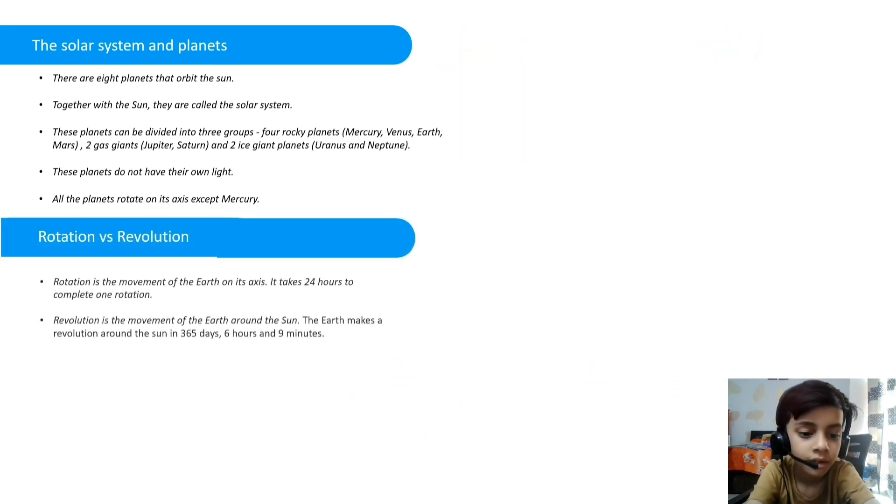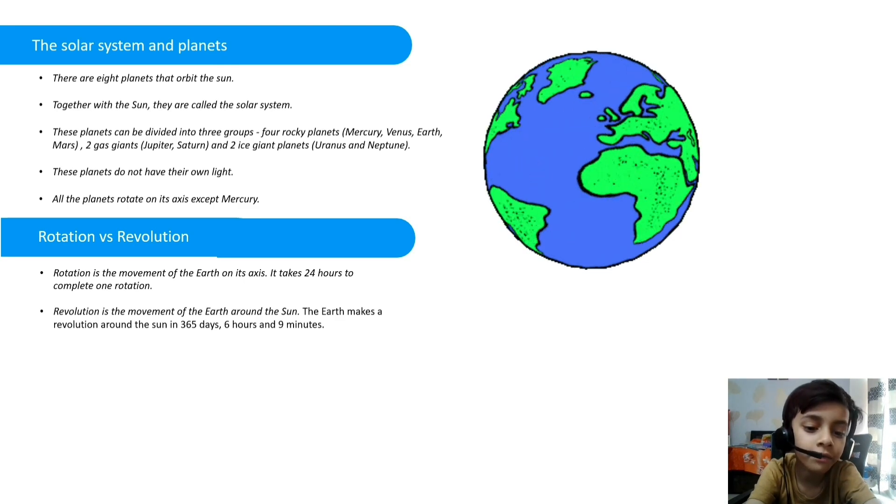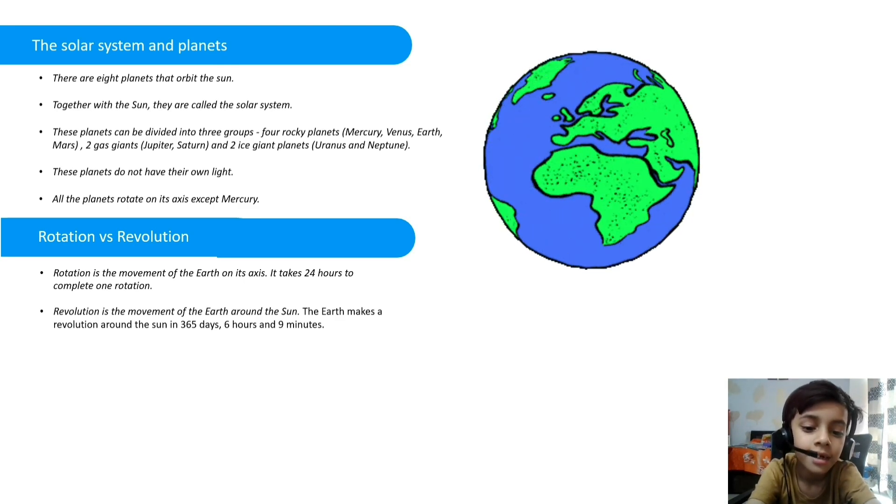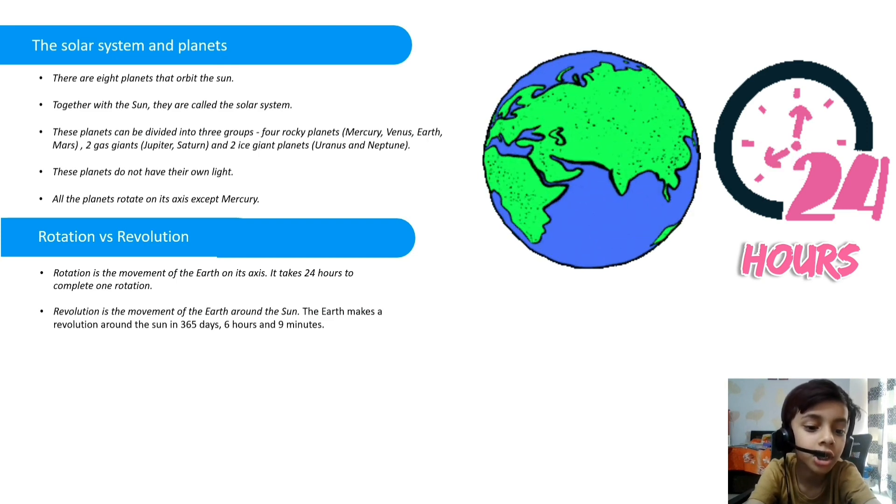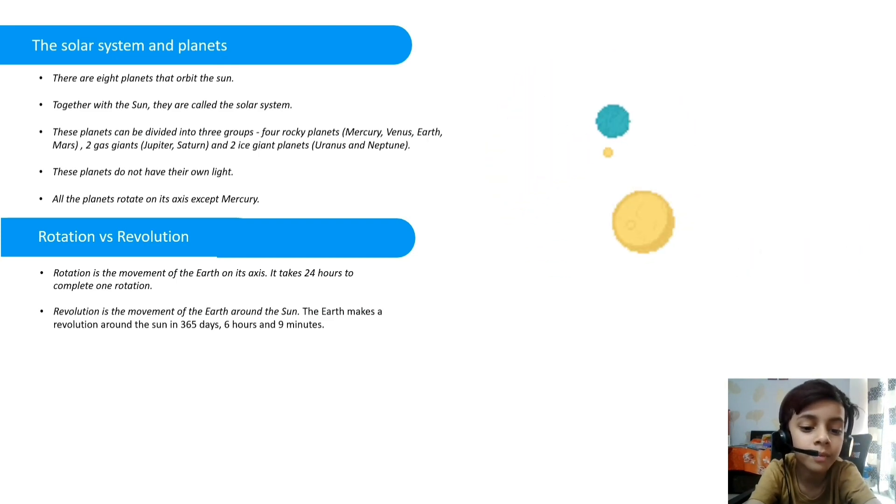Rotation vs Revolution. Rotation is the movement of the Earth on its axis. It takes 24 hours to complete one rotation. Revolution is the movement of the Earth around the sun. The Earth makes a revolution around the sun in 365 days, 6 hours and 9 minutes.